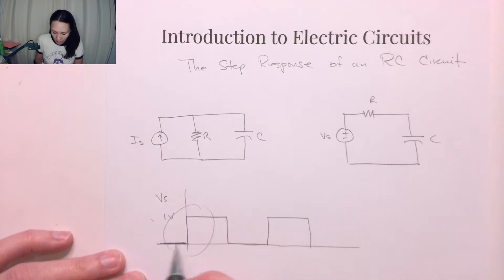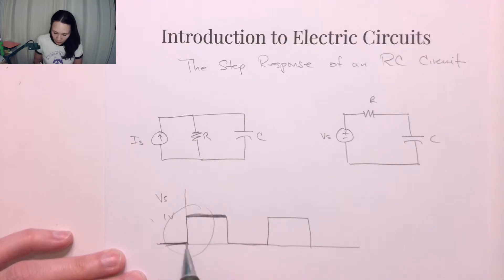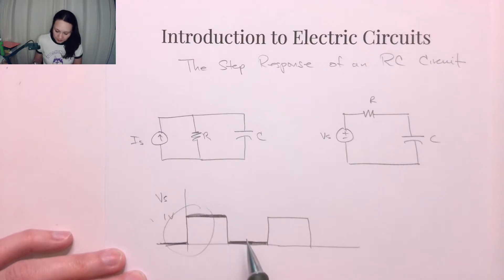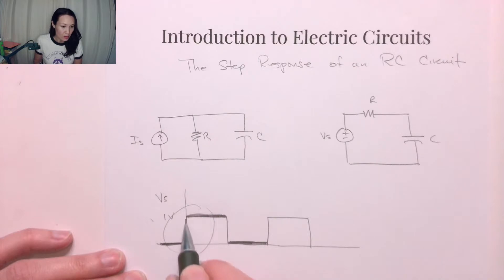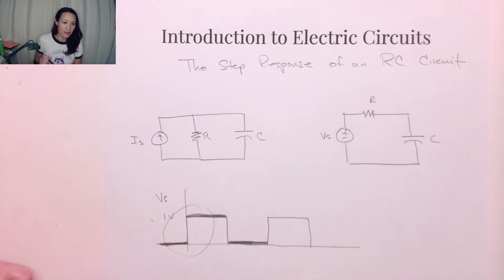what we're basically looking at is what happens when we first turn this circuit on — when we go from no voltage to having a constant voltage. Piecewise, this is actually a DC source. With respect to time, the voltage is not changing for this part, and then at this moment it falls to zero, and again it's not changing for this part. So if we look at what happens from the moment it switches from no source to a source applied, that is the step response.